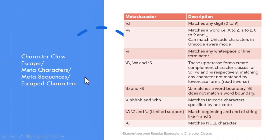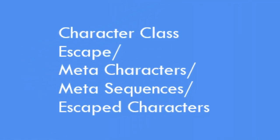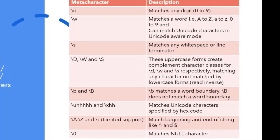There are many names for such characters — character class escape, meta characters, meta sequences, or escaped characters — all referring to some or all of the escape sequences. Many of these are frequently used patterns in regular expressions, made available as pre-built shorthand references. For example, backslash d is a shorthand for matching any digit from zero to nine.